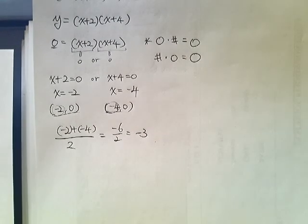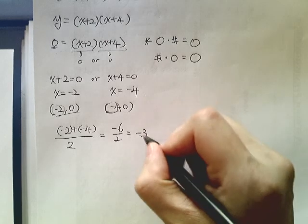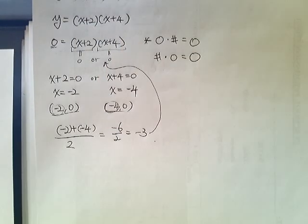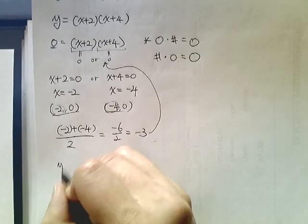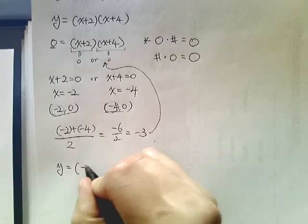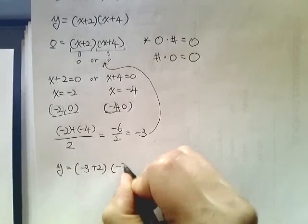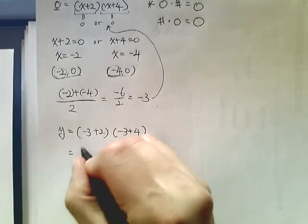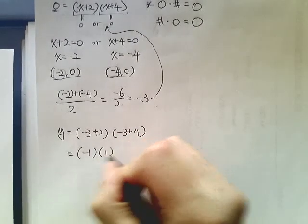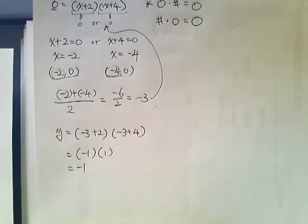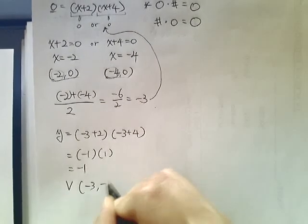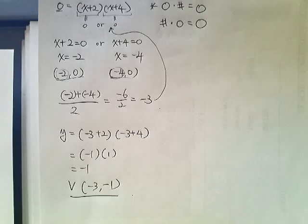So we found the x-value of the vertex. Now, once you find the x-value of the vertex, all we need to do is plug this into the factored form. So we have then y equals negative 3 plus 2, negative 3 plus 4, which is negative 1 times 1, negative 1. So we have found what the y-value is. Therefore, the vertex is negative 3, negative 1. Okay? That's how we do.